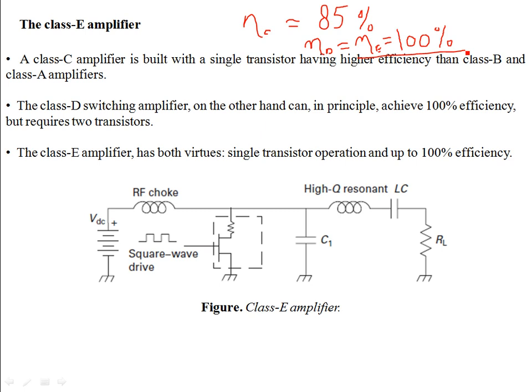Class C, Class D, and Class E — since they are all about efficiency — are used in transmitters, in phase modulations, and in pulse modulations. Basically they can generate any arbitrary output waveforms. They are all about efficiency.